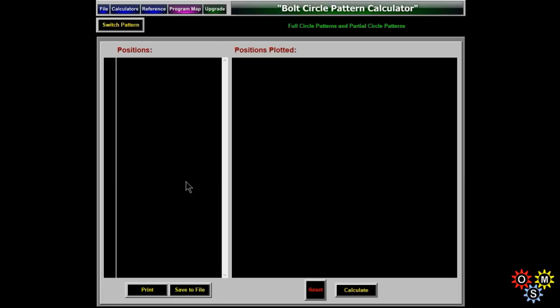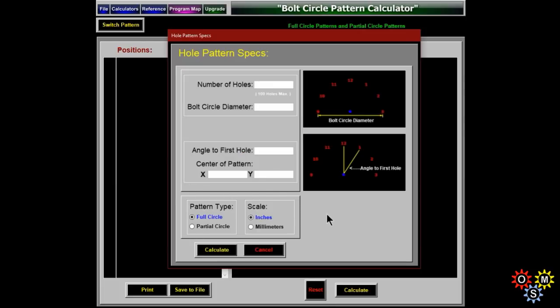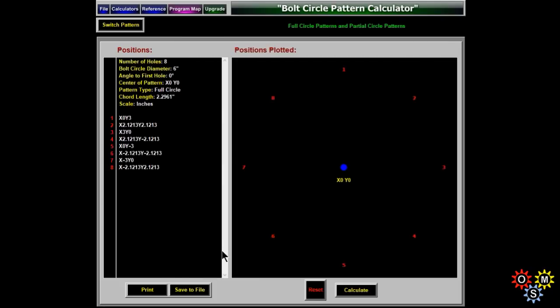Now, bolt circle calculations. Very useful. I don't have a smart DRO, it's a very basic one. So this is very useful. Put in the number of holes. We'll make it simple, eight. And what do we have? A six inch diameter. Angle to first hole, that can be zero or leave it blank. And center of pattern, as usual, probably going to be zero and zero on X and Y. Full circle. Calculate. And there's the pattern laid out.